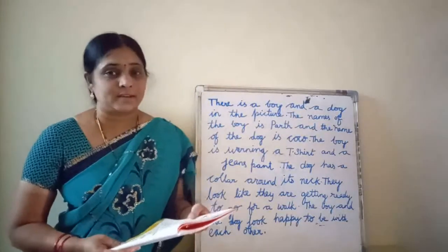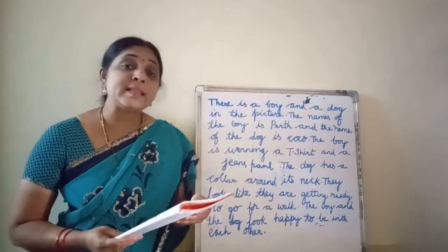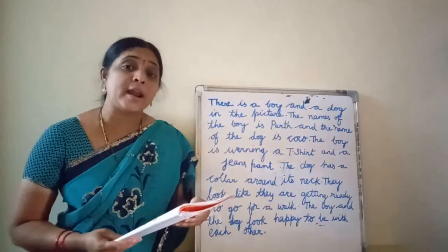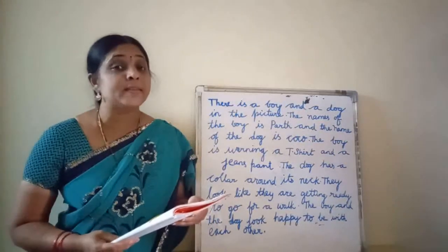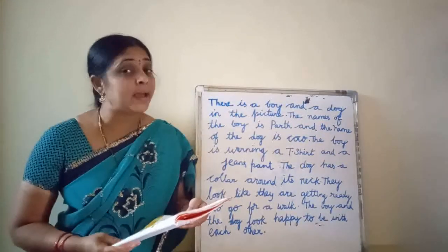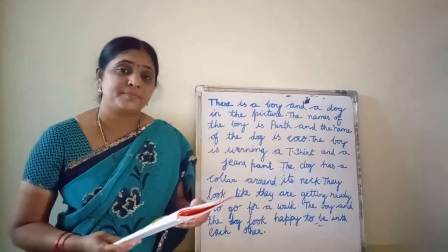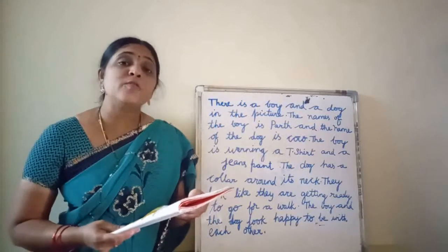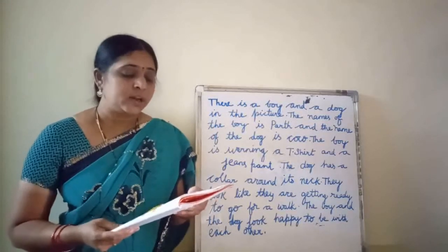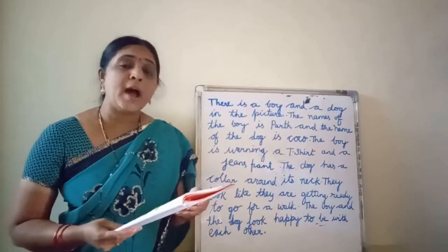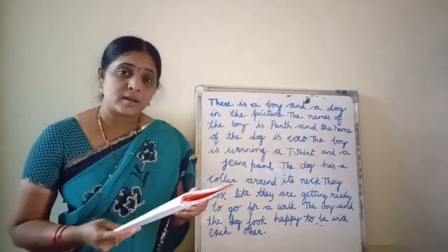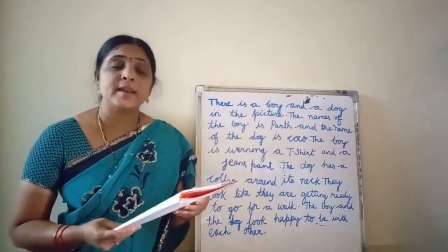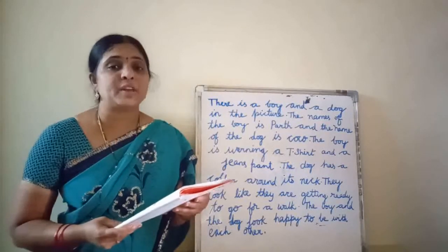Describe a picture. Exercise 4.1: Describe the animal and the person in the picture.